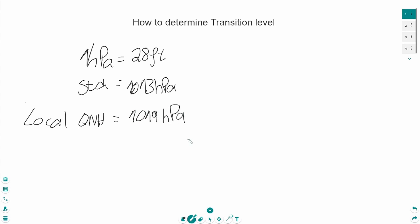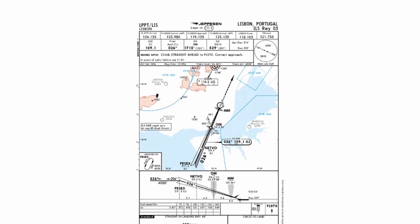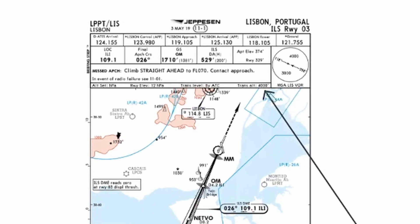And the very last step before beginning with the calculation is to find out the transition altitude. I have already prepared a chart because the transition altitudes can be found in charts. And the chart is right here. This is the Lisbon ILS approach chart for runway 03. And the transition altitude can be found right here.